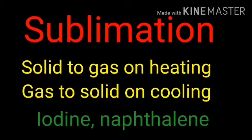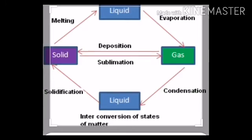Examples of sublime substances include camphor, ammonia chloride, iodine, and naphthalene. To summarize: solid changed into liquid is called melting; liquid changed into gas is called evaporation; gaseous compounds turned into liquid state is called condensation; liquid changes into solid state is called solidification; and solid directly changed into gaseous state and returned back to solid state on cooling is called sublimation.